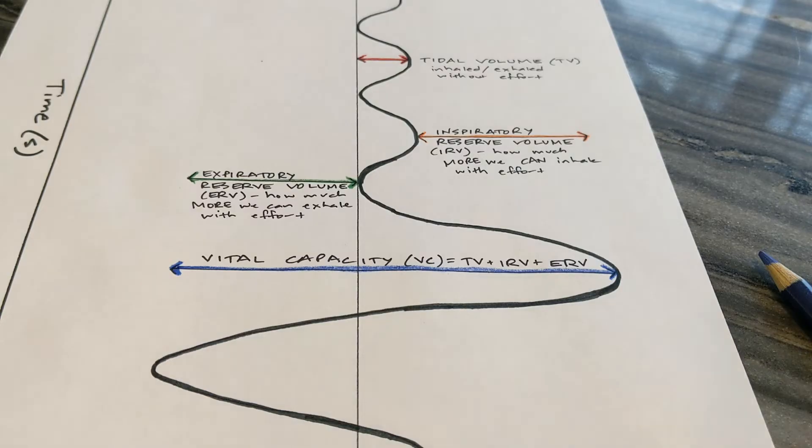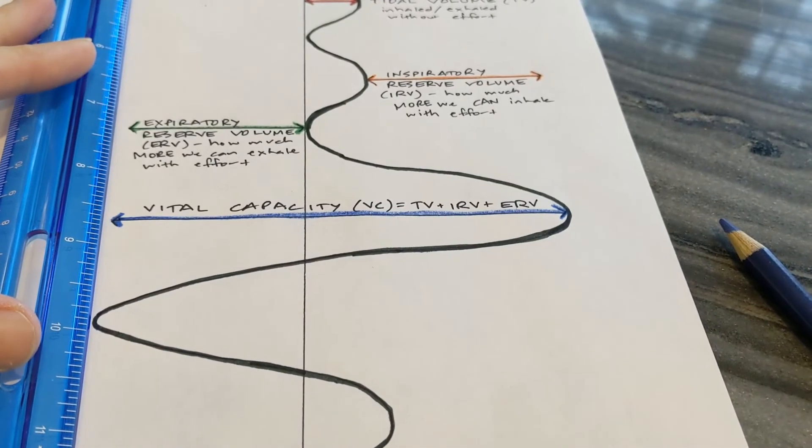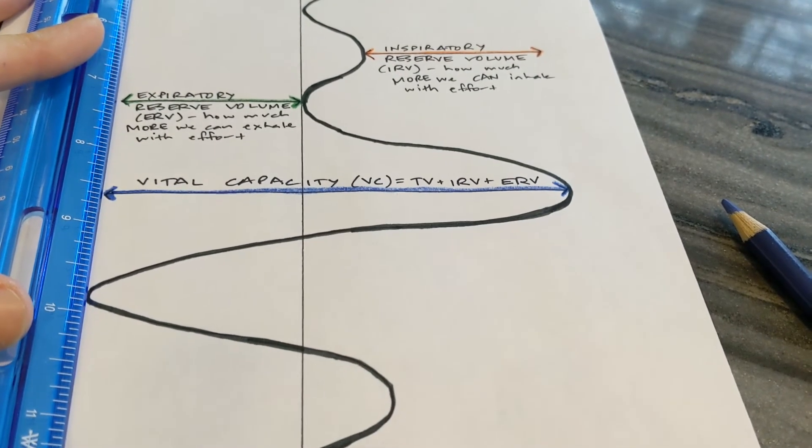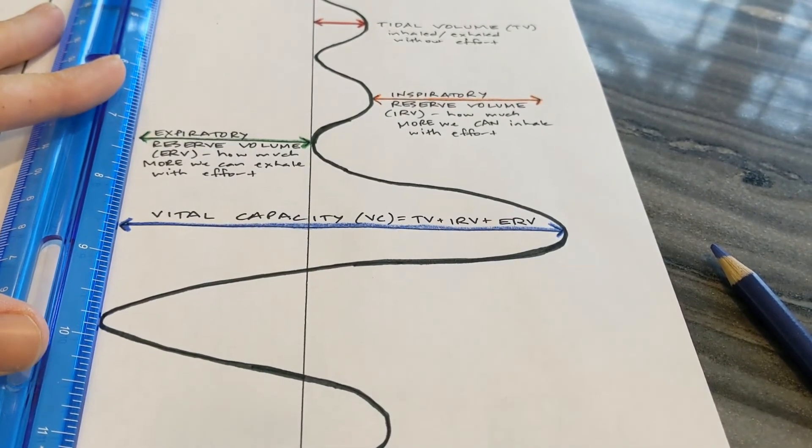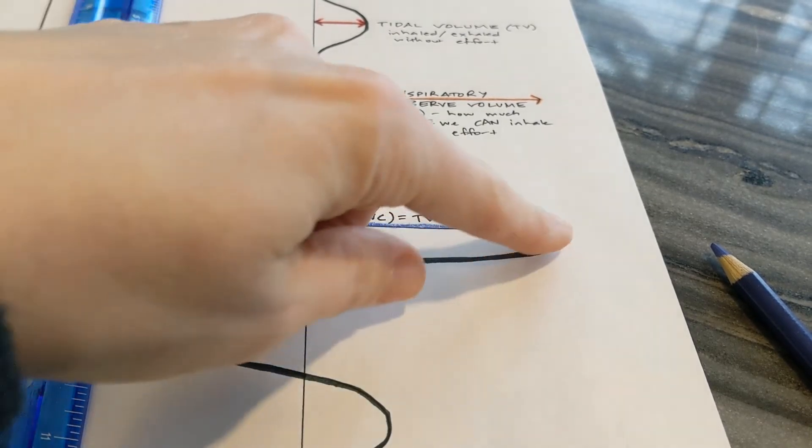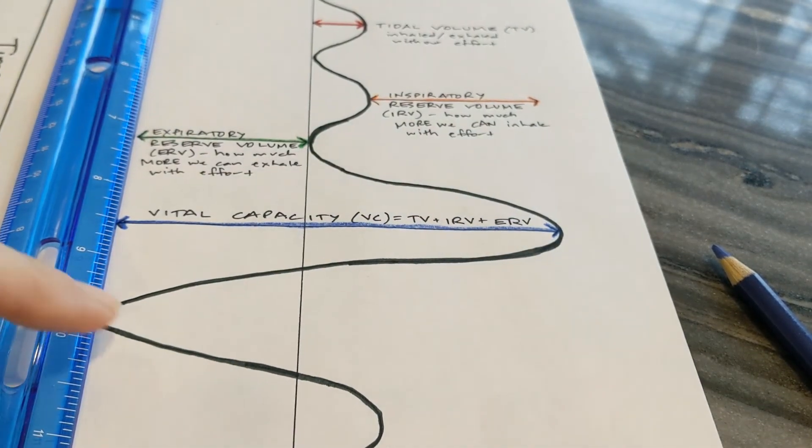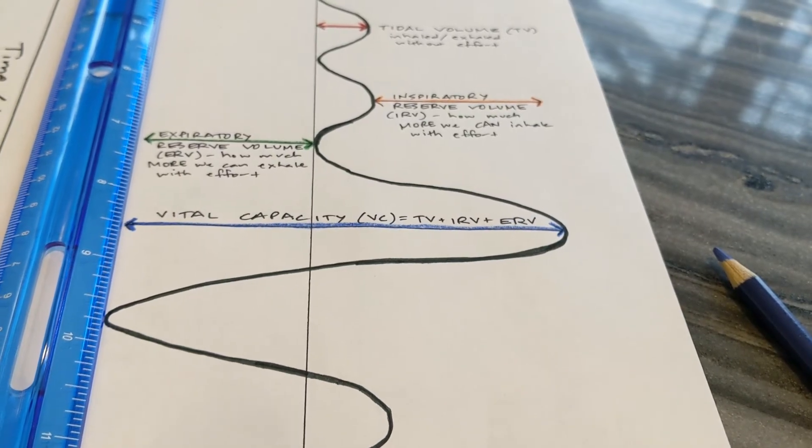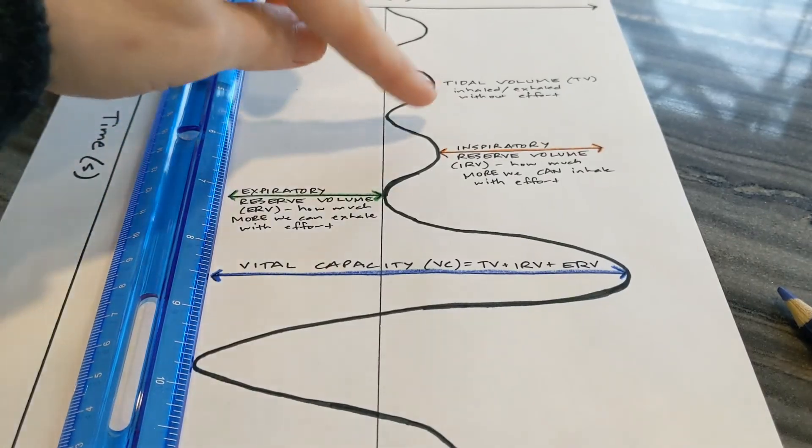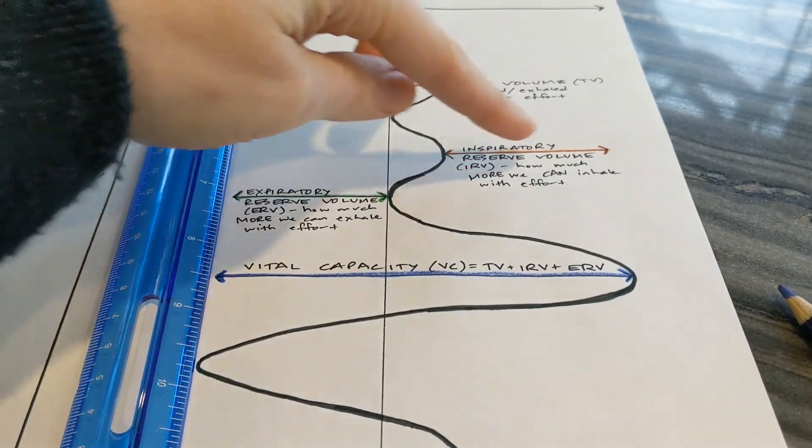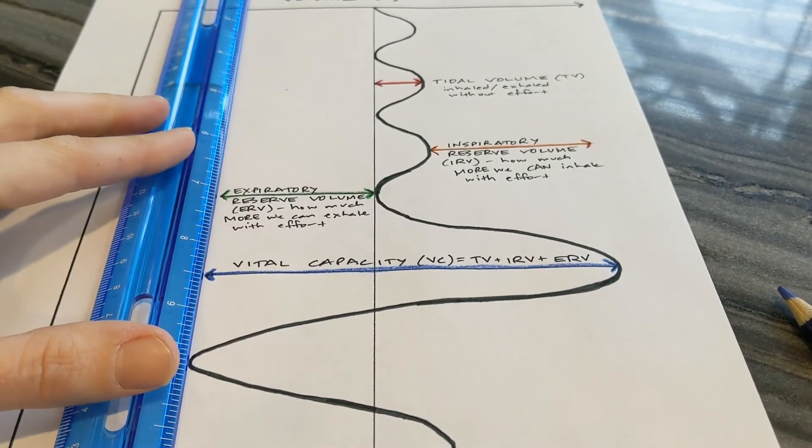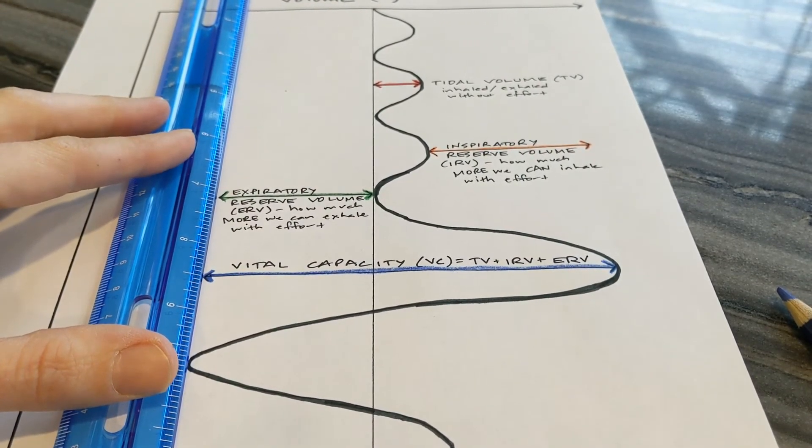The next thing to label is called vital capacity. Vital means life. So this is basically our whole capacity that we can breathe in and out with effort. So when you take your biggest breath in and your biggest breath out from the top of this peak to the bottom of this valley is your vital capacity. Another way to think of it is it's your tidal volume, a normal little breath, plus the biggest breath in that you can take and the biggest breath out that you can take. So all those things together will always equal your vital capacity.